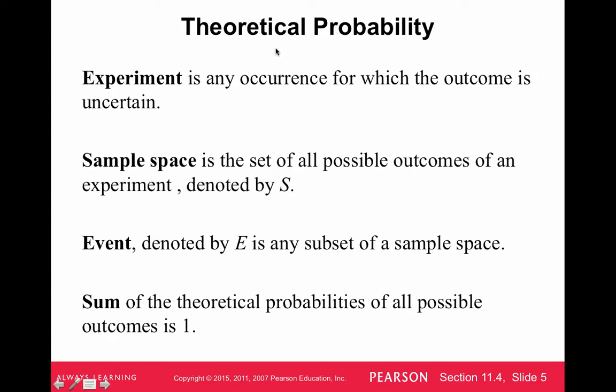In theoretical probability, an experiment is any occurrence for which the outcome is uncertain, and we want to know the likelihood of certain outcomes from that experiment. An experiment has a sample space. A sample space is the set of all possible outcomes of an experiment, denoted by S. And then we list out the outcomes. An event is denoted by E as a subset of the sample space.